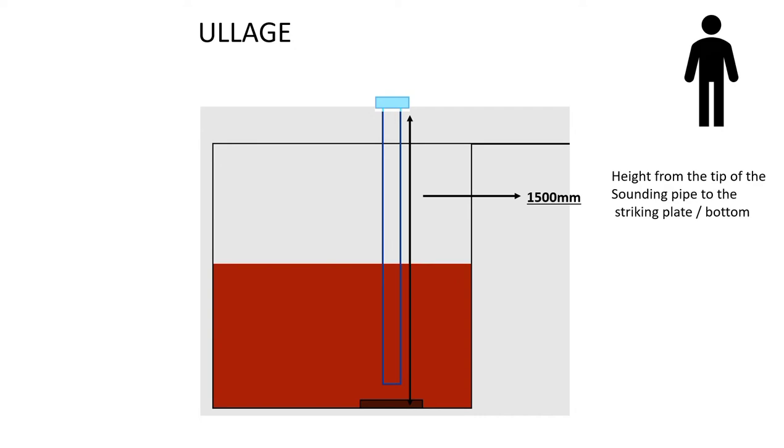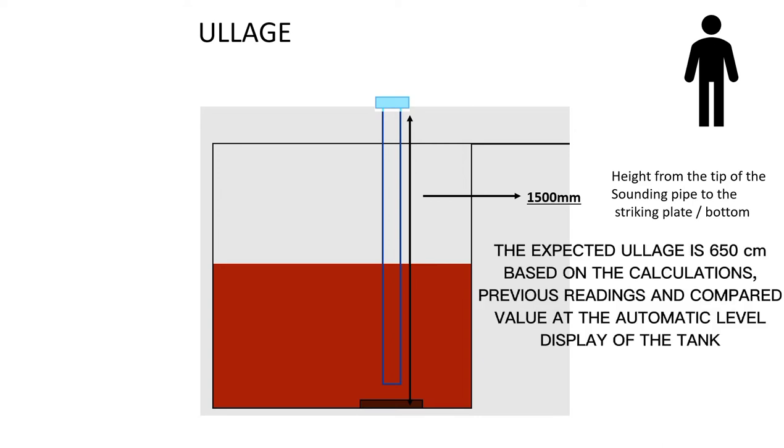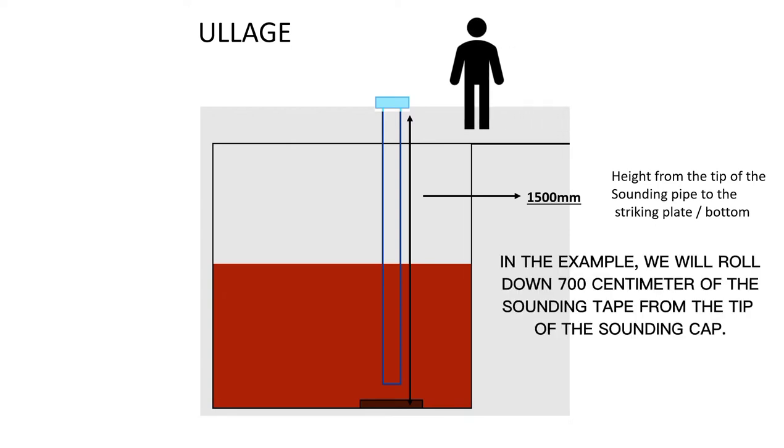Ullage. Here we have a tank filled with heavy fuel oil. The distance from the tip of the sounding pipe to the striking plate is 1500 cm. The expected ullage is 650 cm based on the calculations, previous readings and compared value at the automatic level display of the tank. In the example, we will roll down 700 cm of the sounding tape from the tip of the sounding cap.